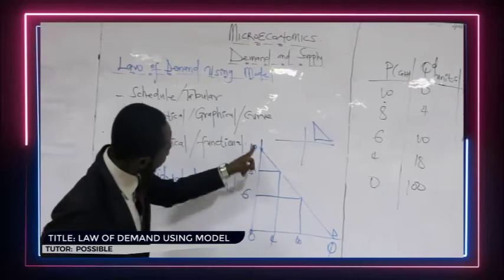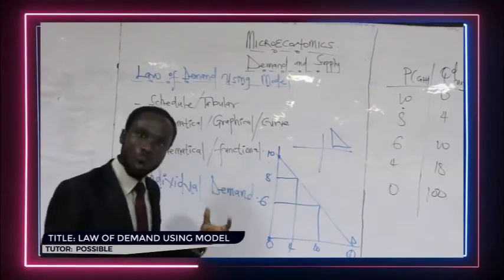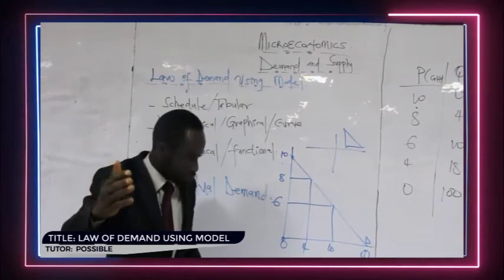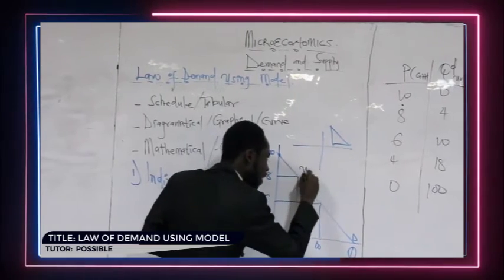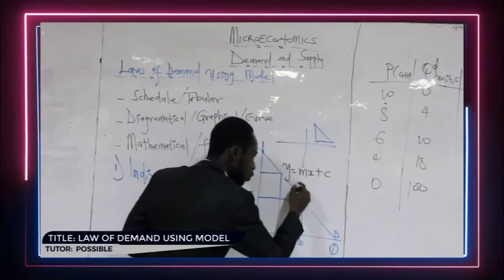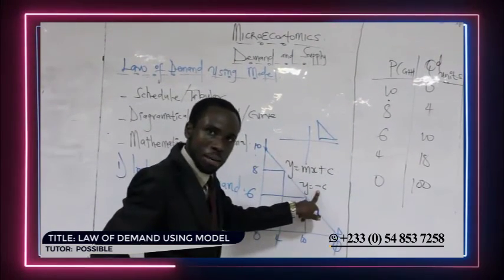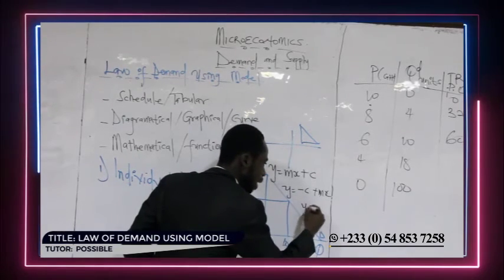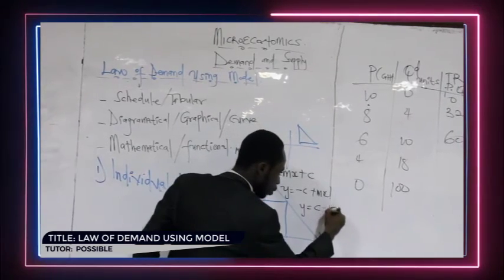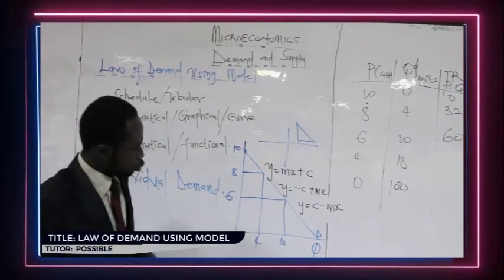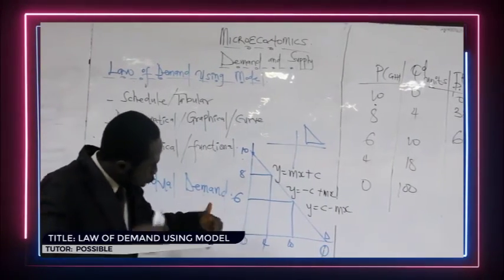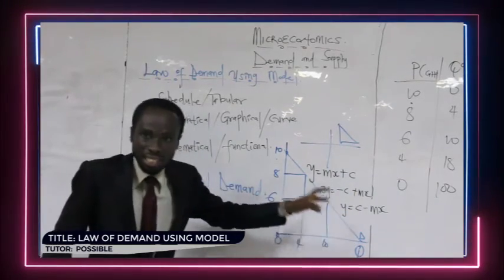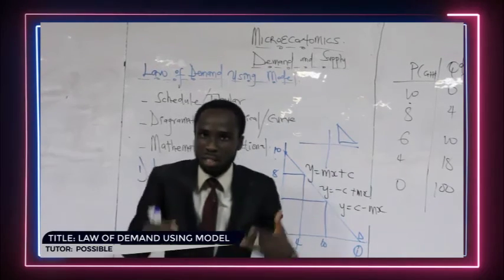Before I leave, don't forget that the demand curve is linear — it is a line in nature. Therefore, remember the formula for the equation of a line: y = mx + c. This can also be written as y = c + mx, or y = c − mx. Keep this at the back of your mind, because you should anticipate that the demand function must follow this format since the demand curve is linear. Once again, my name is Possible — thank you.